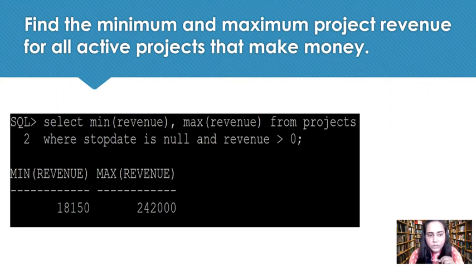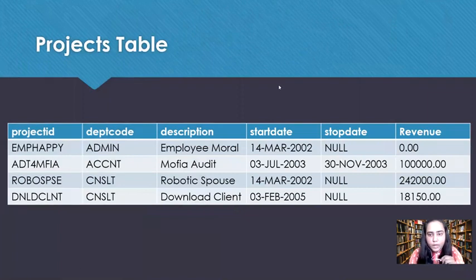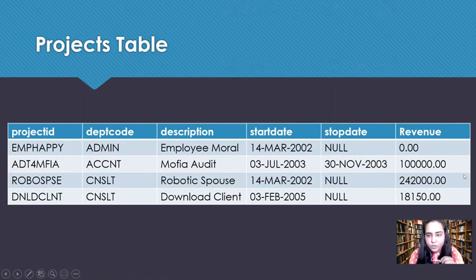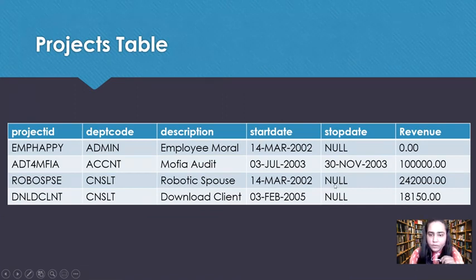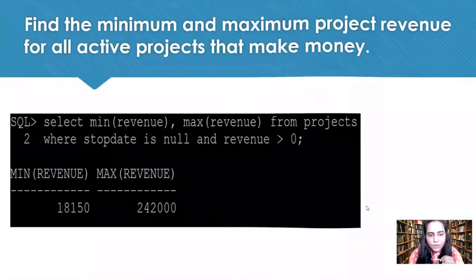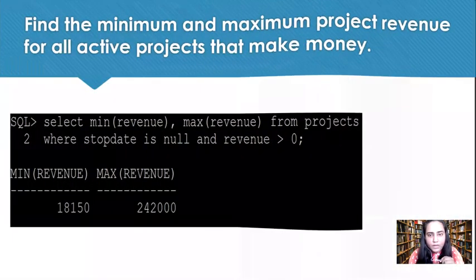Let's verify the result. In the projects table, there are only three projects that have a null stop date, so we don't consider the second project. The first project has revenue zero, so we don't consider that either. Only two projects remain — the minimum revenue is 18,150 and the maximum revenue is 242,000, which matches our query result.